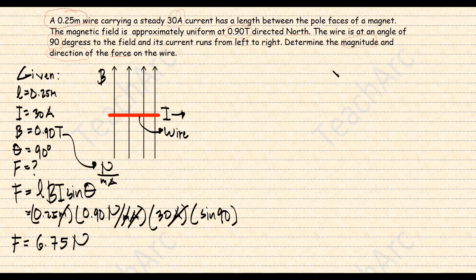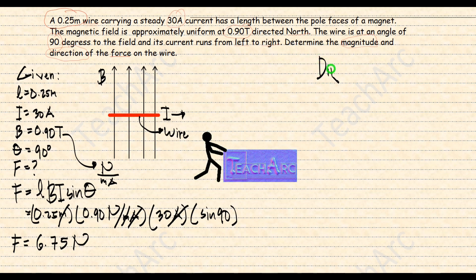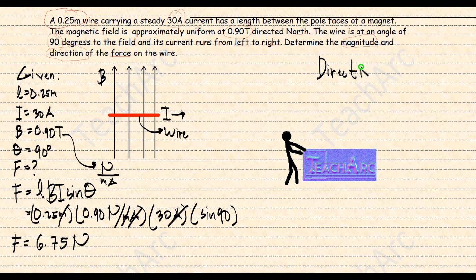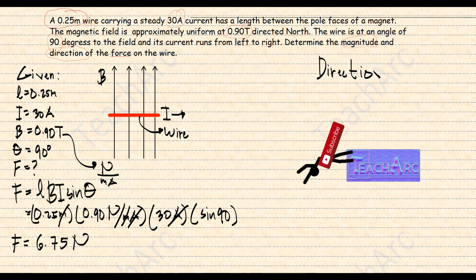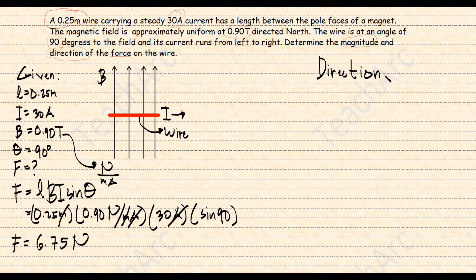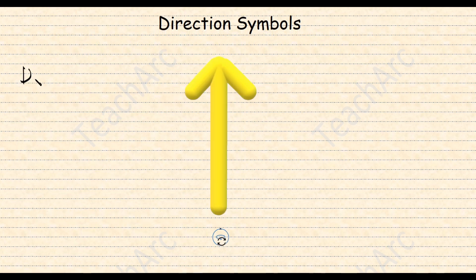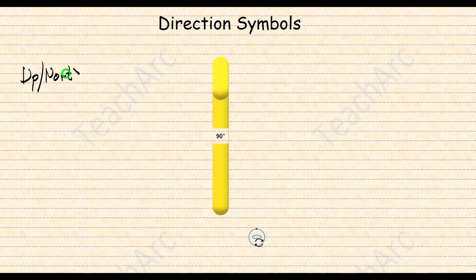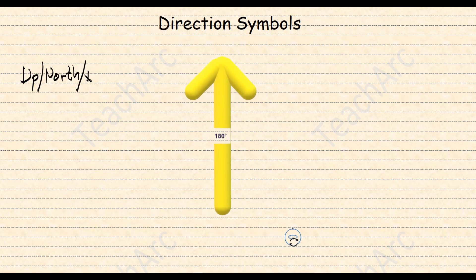We can get the direction using the right-hand rule and will return to this problem. Let's learn how to use the right-hand rule. But before we go there, these are the common symbols used to indicate directions.